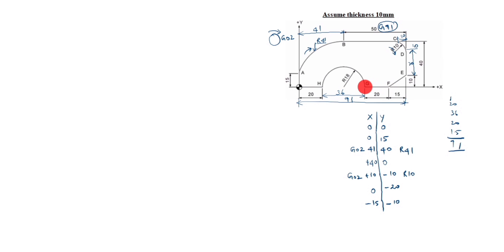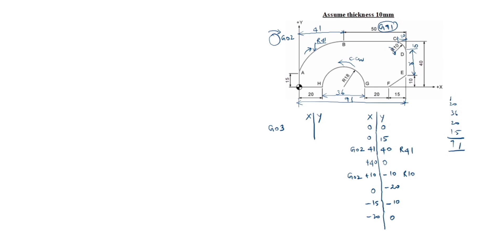X-axis is minus 20. Up to here finished. Go with H — this side is counter-clockwise. Counter-clockwise is G03. This value is 36, so X-axis is minus 36, Y is 0 or 18. Up to here finished. Then X-axis is minus 20, Y-axis is 0.